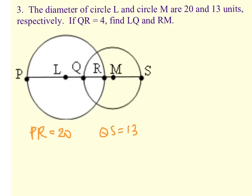I'm going to, just from those two pieces of information, also identify that the radius, so PL and RL are both 10 in circle L, and the radius, QM and SM, would be 6.5 for circle M. And one other thing they tell us is that QR is 4. And what we want to do is figure out LQ and RM.